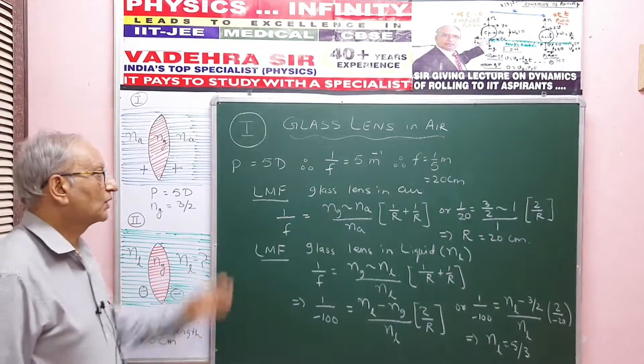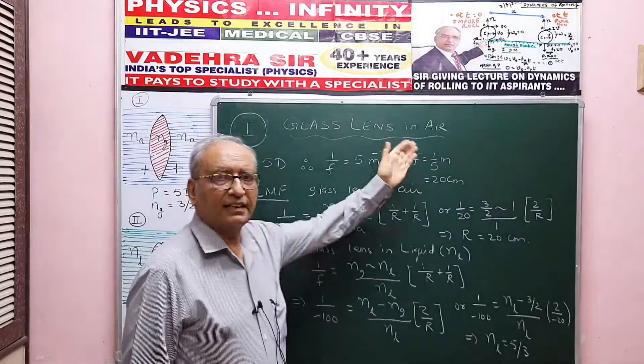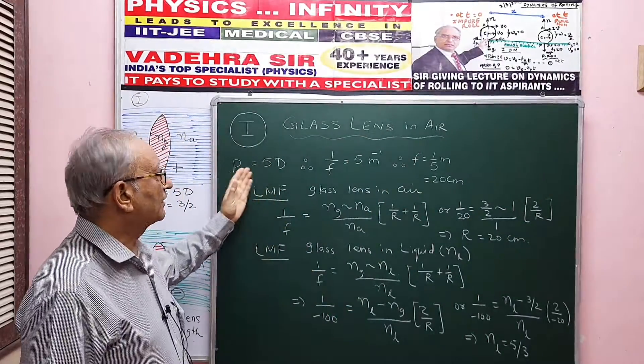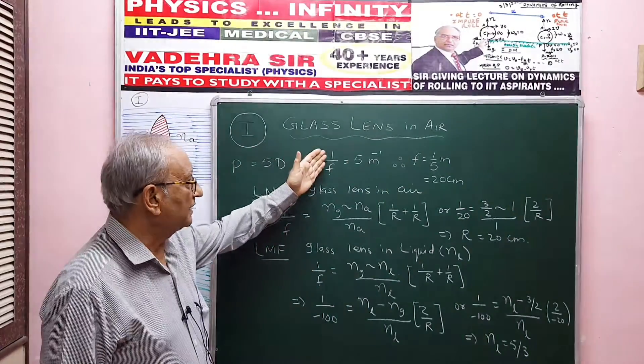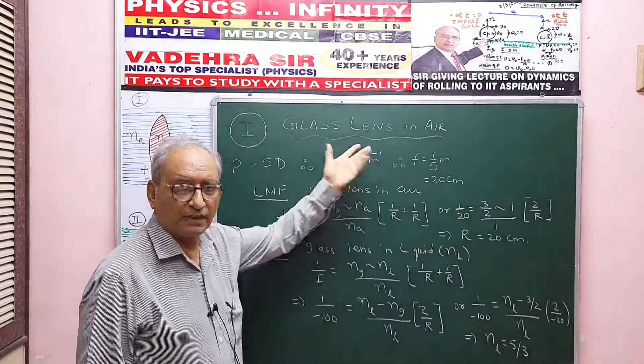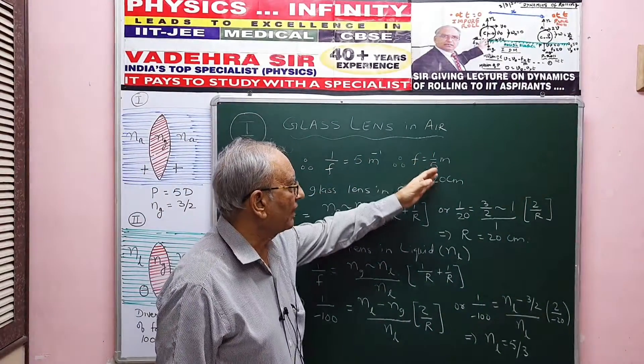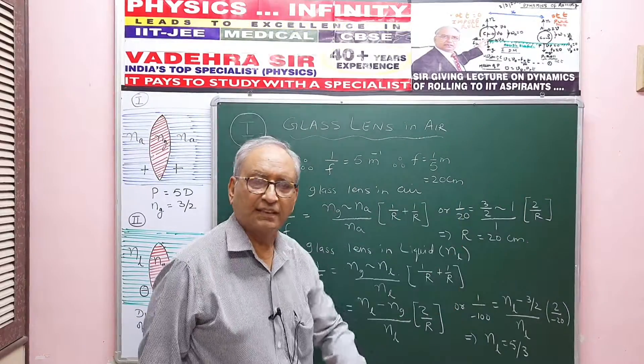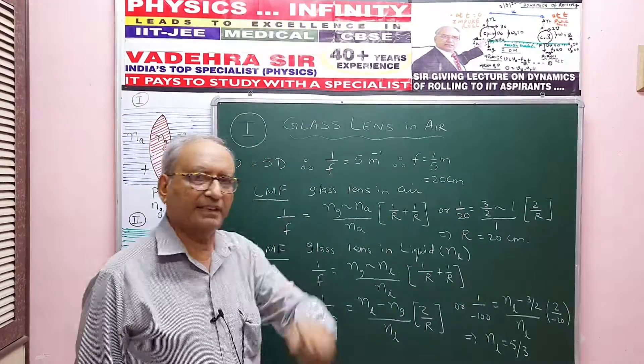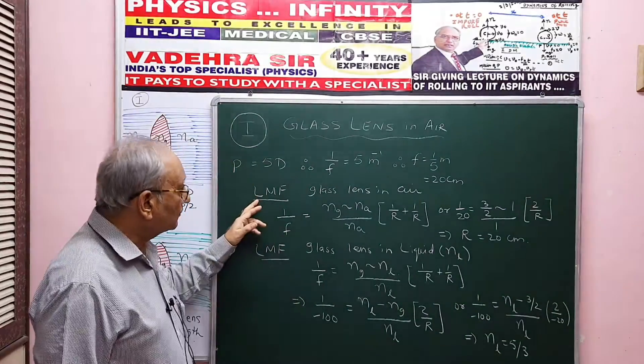So here we are: glass lens in air, power is 5 diopters. That means 1 by F is 5 per meter, so our focal length is 1 by 5 meter, and that is 20 centimeter. So equi-convex lens of glass, focal length 20 centimeter in air.